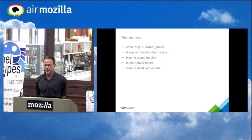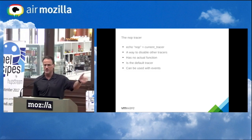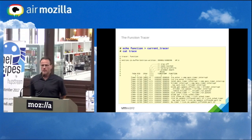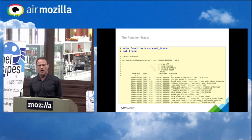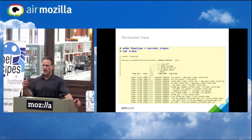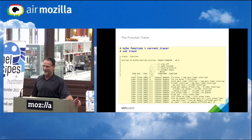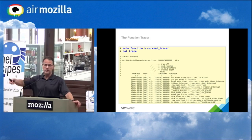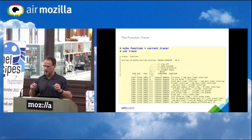The no-op tracer is the way to disable everything — it's the default tracer on boot. You just echo the name of a tracer into current_tracer to change it. One of the more interesting ones is the function tracer, which lets you see almost all the functions running inside the kernel. This is where we have dynamic modification of kernel code: we enable the entire kernel to be rewritable, patch the functions, then switch everything back to read-only.